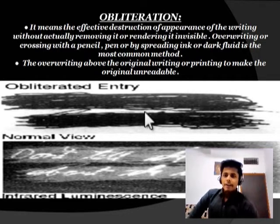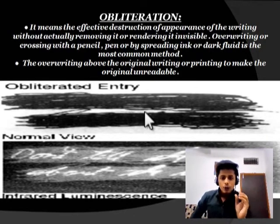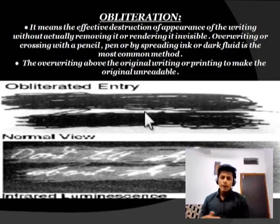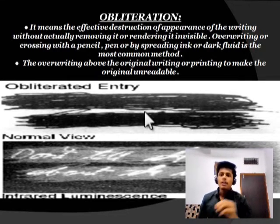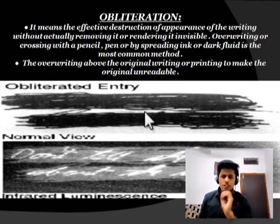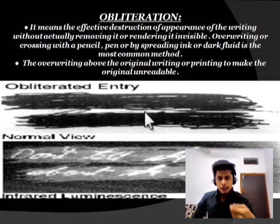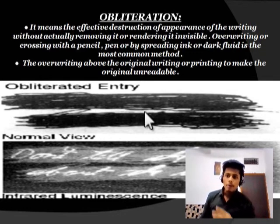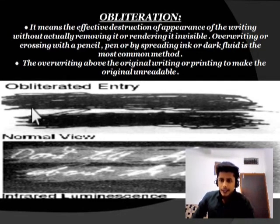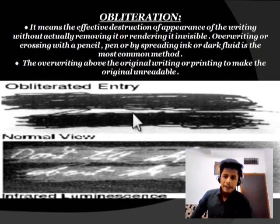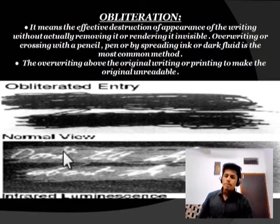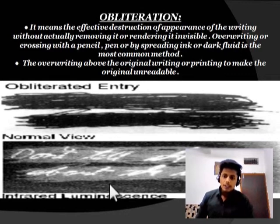Obliteration means the effective destruction or hiding of the appearance of the original writing. The original writing could be covered by overwriting or crossing with a pencil or pen, or by spreading dark ink fluid. The most common method is pen overwriting, crossing, or applying liquid ink on top — which is obliteration. We can obliterate content so it is not visible, but using infrared luminescence light we can find out what was written.